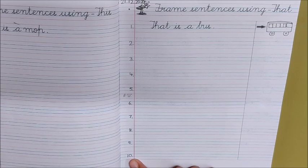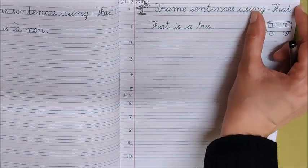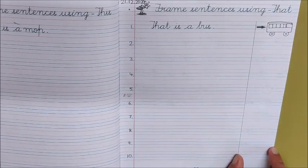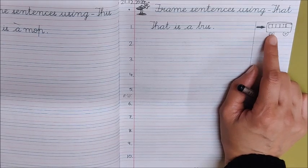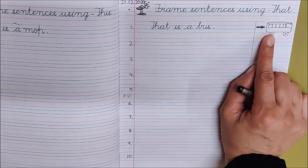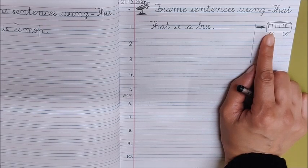Now children, after writing the numbers, we are going to draw pictures in this column. One picture has been made already. What is it? It is a bus. Tell me children, is the bus near or far? Yes, it is far.